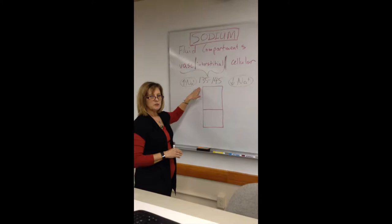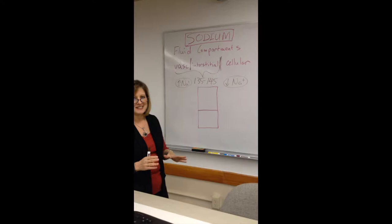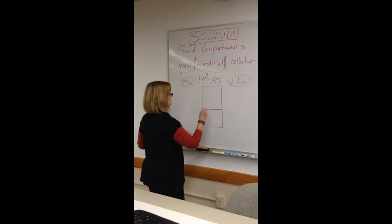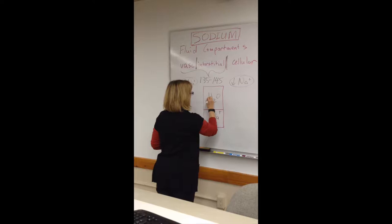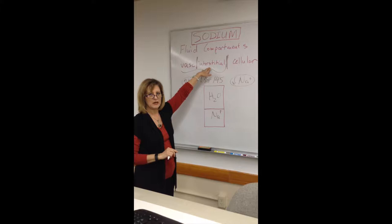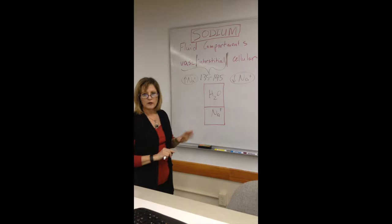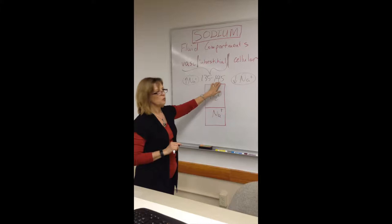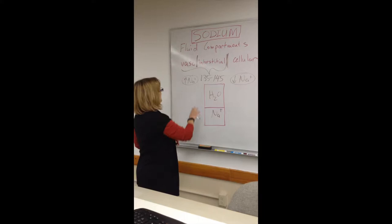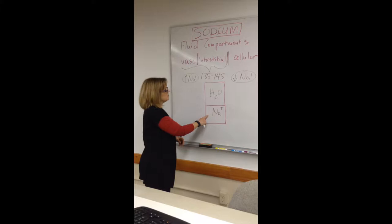Sodium is a little bit different in that we have to think of it as a concentration, not as a number by itself. It's in a concentration with water, so water and sodium have to be considered together. Wherever sodium goes outside of our cells, it passively pulls water with it. When sodium starts to get outside the 135-145 range, you have to change the balance of this concentration.